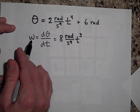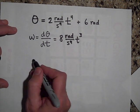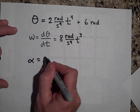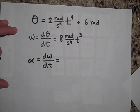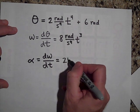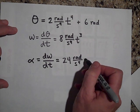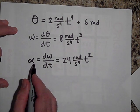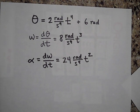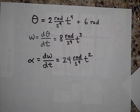Could you tell me what the angular acceleration will be at one second? Go ahead and pause. Angular acceleration is the derivative of omega with respect to time, so that would be 24 radians over seconds to the fourth times t squared. To get alpha at one second, you put in one second and you get 24 radians per second squared.